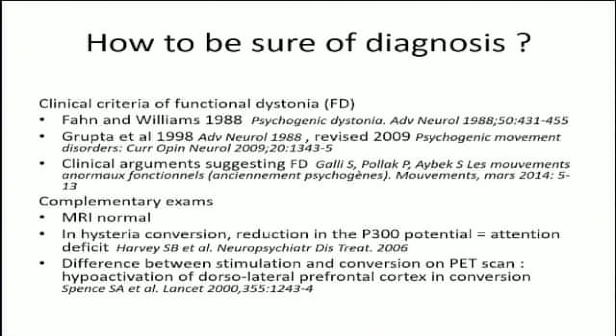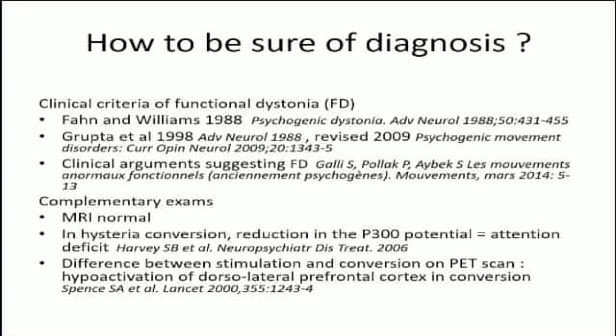How can we be sure of the diagnosis? There are different proposals of clinical criteria but there is no definitive evidence. Clinical arguments can only suggest functional dystonia, and only disappearance of the deformity with placebo is the only way to be sure of psychogenic origin. For complementary exams, MRI is normal, but we can distinguish simulation from conversion on PET scan, with hypoactivation of the dorsolateral prefrontal cortex in conversion. In hysteria/conversion there is also a paper showing reduction in evoked potentials — specifically tardive potentials — related to a deficit of attention.